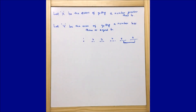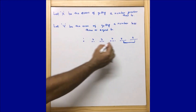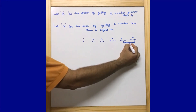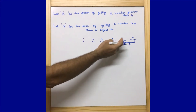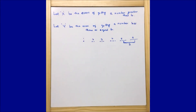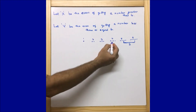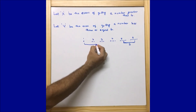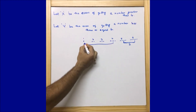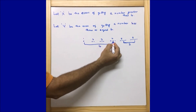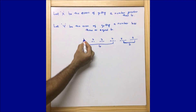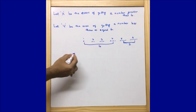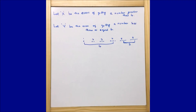The number of favorable outcomes for event X is 2, because either we could get 5 or 6, which is greater than 4. Similarly, for the second part of the question — getting a number less than or equal to 4 — the number of favorable outcomes is 4, because it starts from 1 and ends with 4, giving us altogether 4 outcomes.